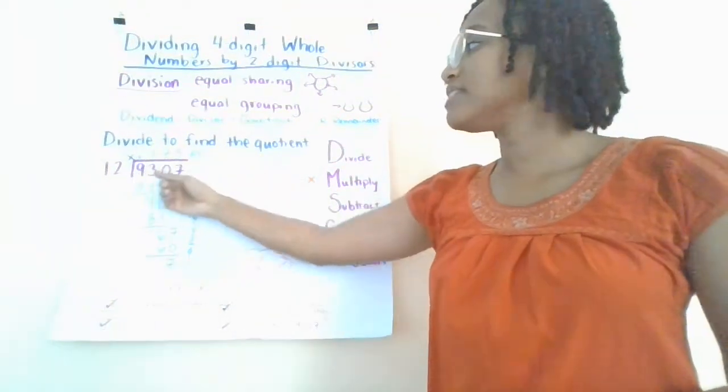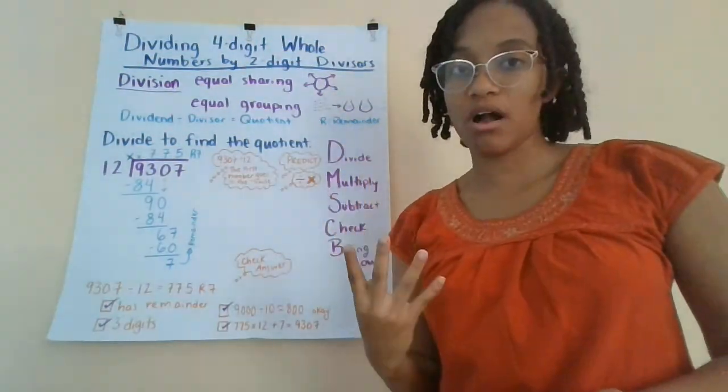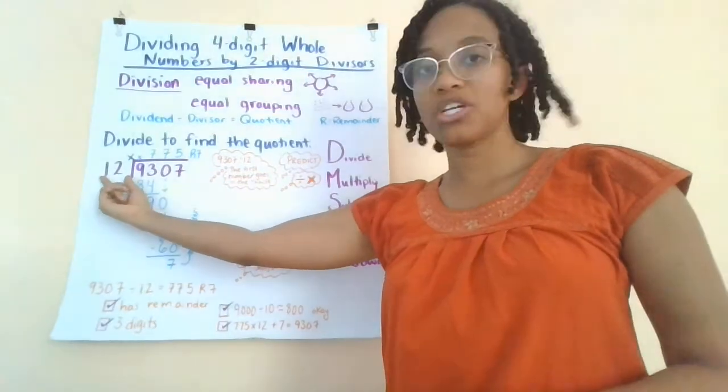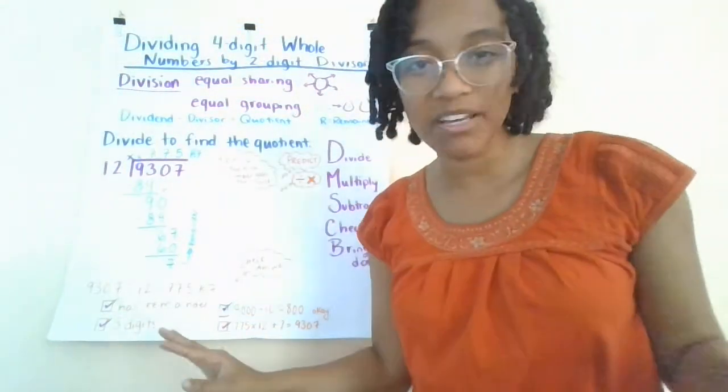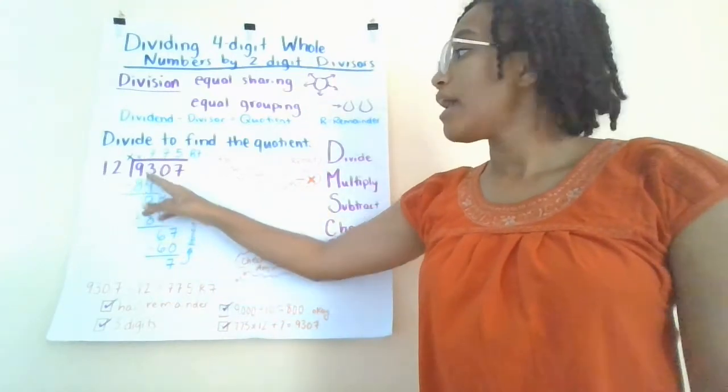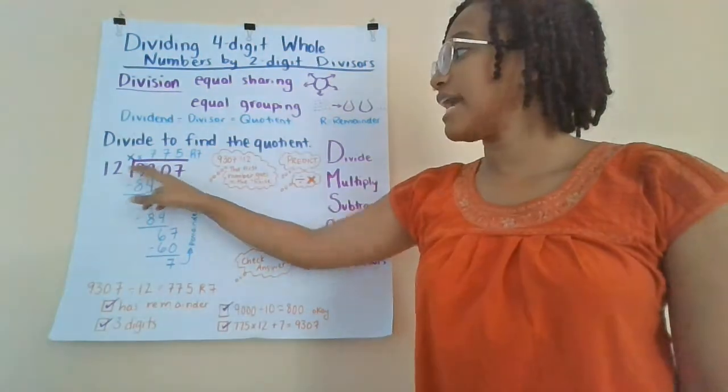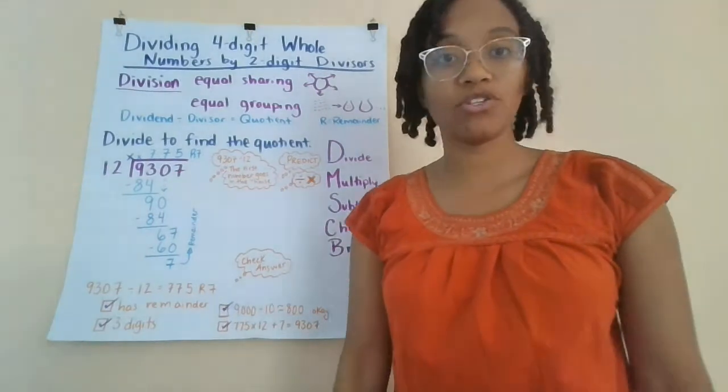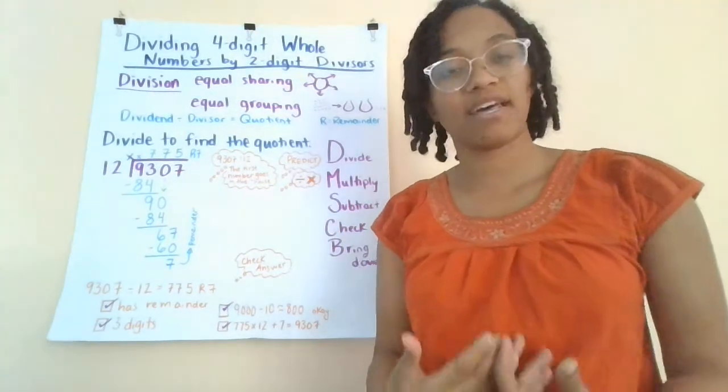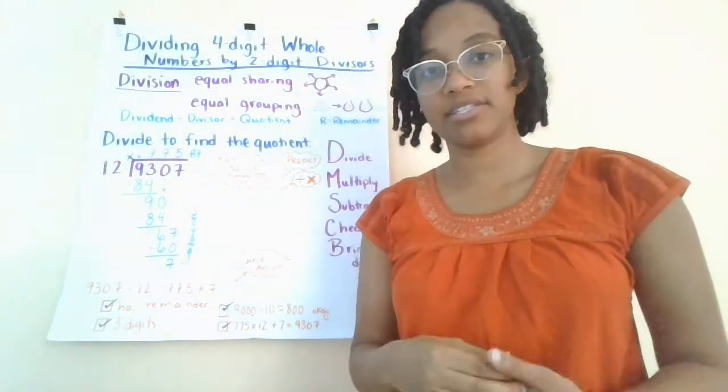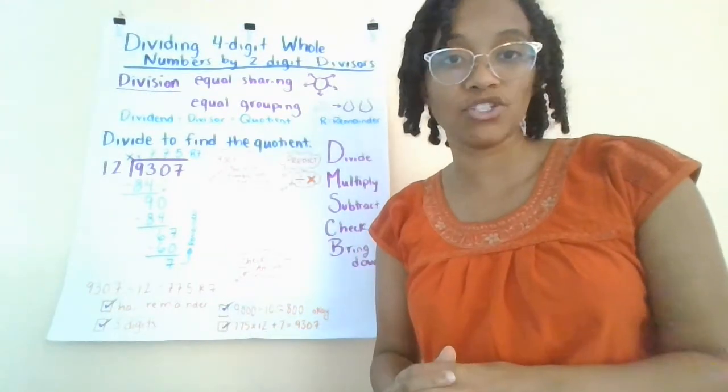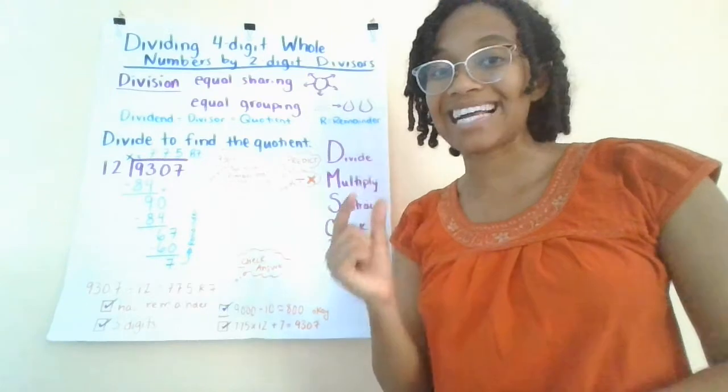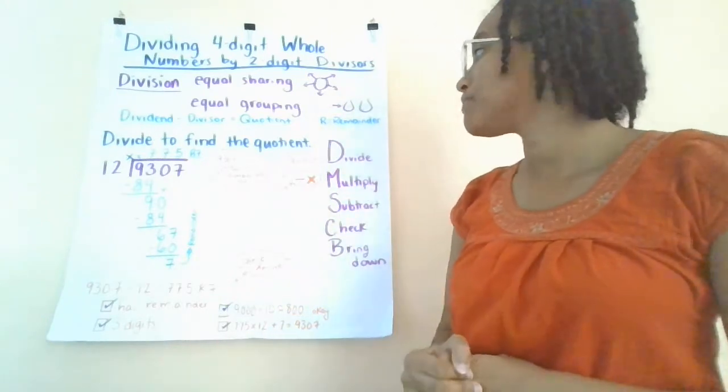Now I'm going to predict how many digits we're going to have in the quotient. Well, I look at the dividend. It's four digits long and I'm dividing by a two-digit number. I know that two-digit number cannot possibly fit into our first digit here. I look at the first two digits, 93. That's certainly bigger than 12. So I predict that our quotient should have three digits because we know that the first time that divisor is going to fit into our dividend is in that second digit of the dividend.